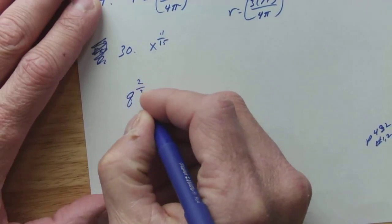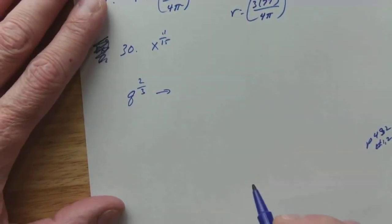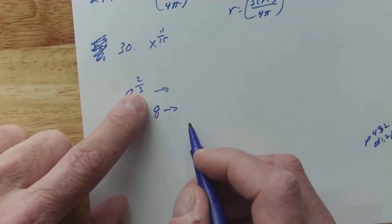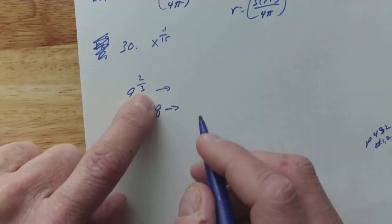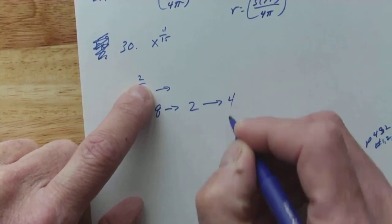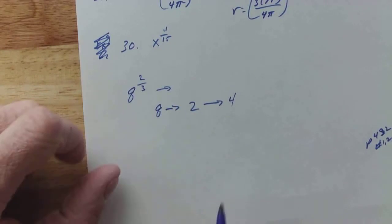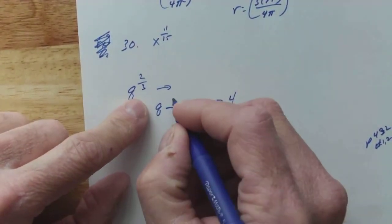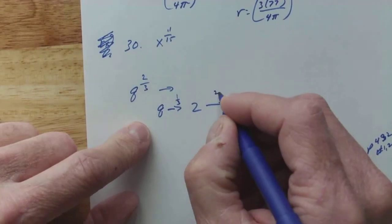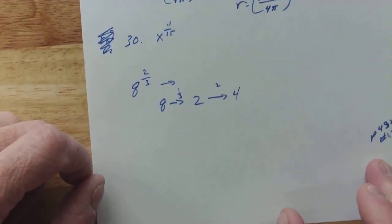So, 30 was x to the 11/15ths. So, I'm going to practice a couple that are going to be a little bit more challenging. This just pays off down the road. So, if I have 8 to the 2/3rds, first thing I'm going to do is I'm going to take, well, let's go like this. I'm going to take 8, I'm going to take the 1/3rd root, or the 3rd root, takes me to 2, and then I'm going to square it and it takes me to 4. So, the 3rd root is what took me to the 2, and then I'm going to square it and it takes me to the 4.